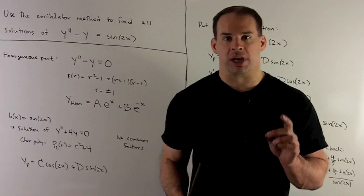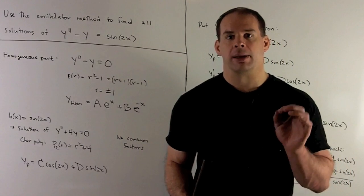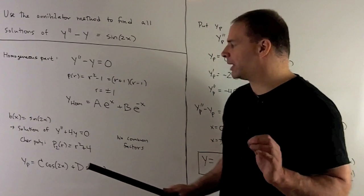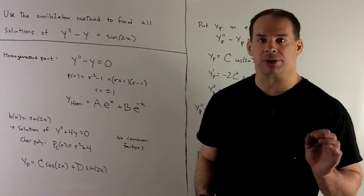Now, to get a particular solution, we'll take a look at b of x equal to sine of 2x. We just know that that's going to be a solution of y double prime plus 4y equals zero.